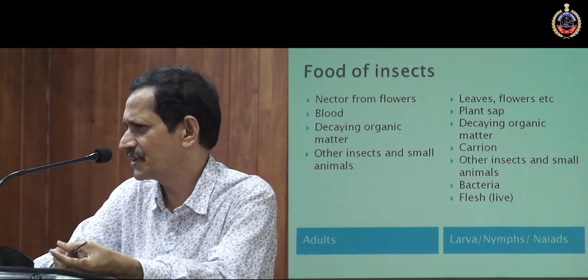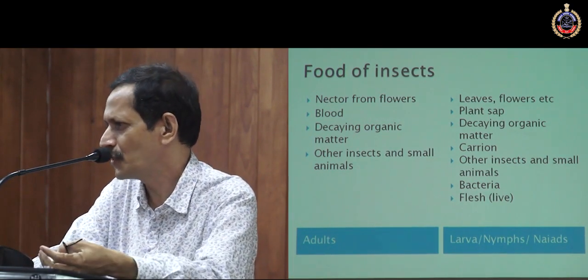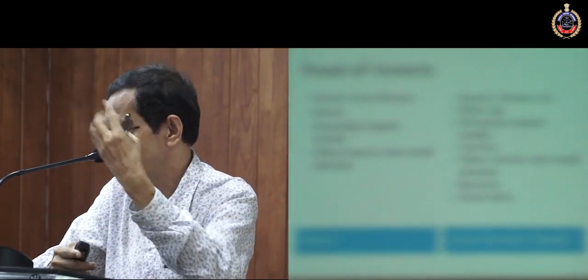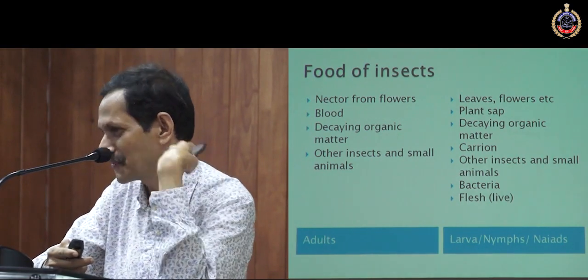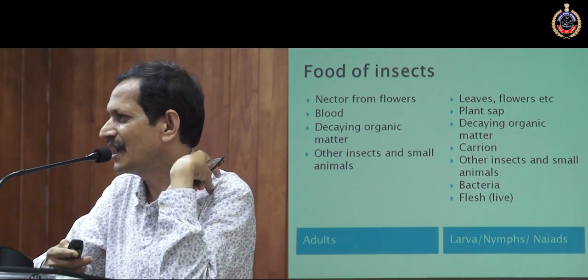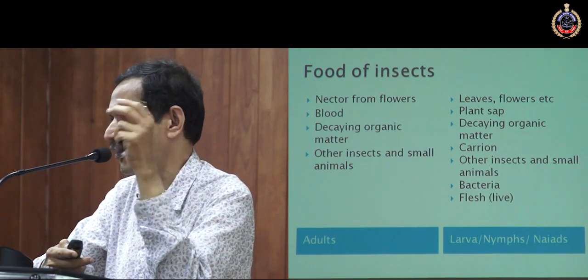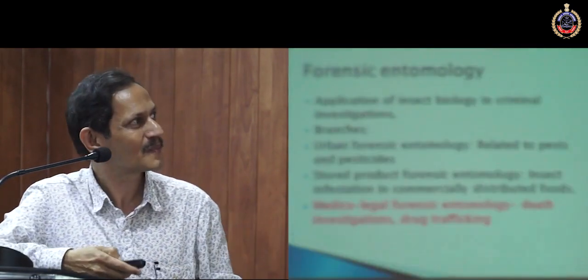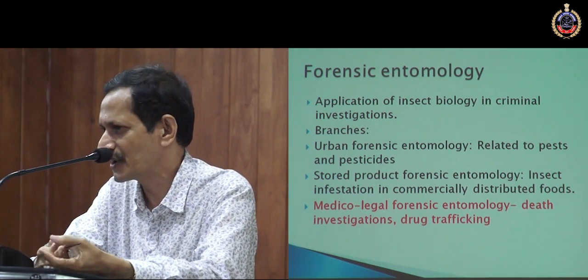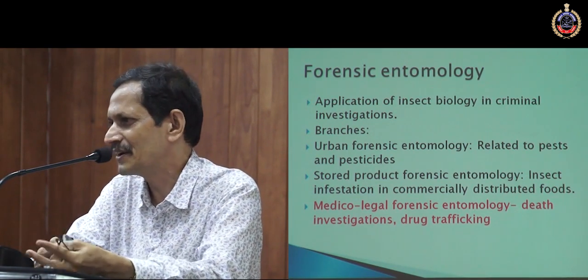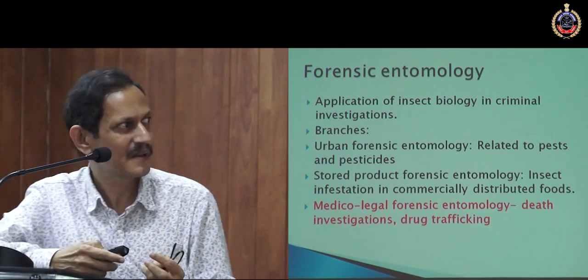The food of insects is also very diverse. Some of them are purely vegetarian — they may take nectar, plant leaves, shoots, flowers, etc. But some of them can bite us and take out blood — like mosquitoes. And some of them prefer dead bodies, which are of interest to forensic entomology. Forensic entomology means the application of insects, their biology, behavior, and ecology in criminal investigation.